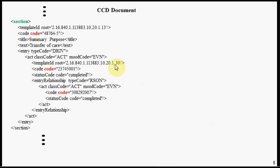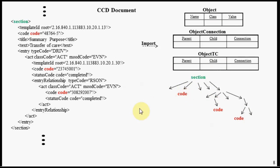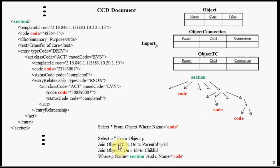Let's look at another XML example — a different XML document in the healthcare field. Here, the code information is an attribute of a tag called 'code'. TCSQL again provides the ability to import this XML data into the soft schema tables. To pull the code information out, you write a SELECT statement querying from the soft schema tables. To limit the code values to just the context of 'section', you use the transitive closure table to bound the context of the code attribute underneath the section field.